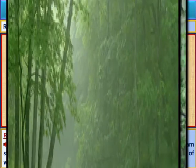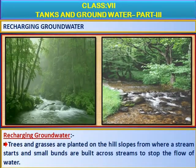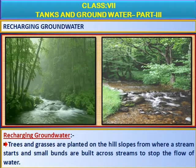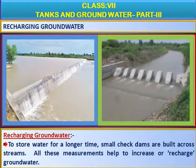Under these projects, trees and grasses are planted on the hill slopes from where a stream starts, and small bunds are built across streams to stop the flow of water. To store water for a longer time, small check dams are built across streams. All these measures help to increase or recharge groundwater.